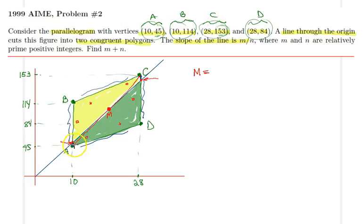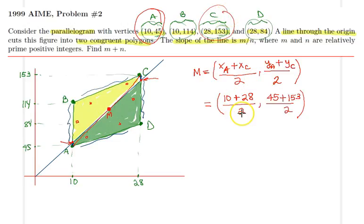When we plug in the values for A and C in that equation, we get 10 plus 28 over 2 and then 45 plus 153 over 2, which finally gives us 10 plus 28, 38 over 2 is 19, and then 45 plus 153 would be 198 over 2, which gives us 99. So that's the coordinates of point M, which is (19, 99).